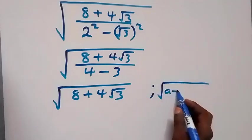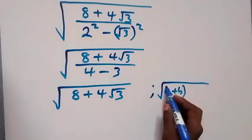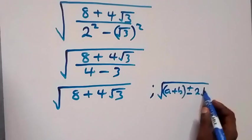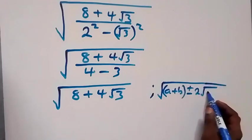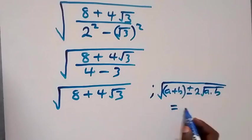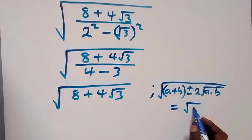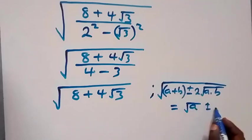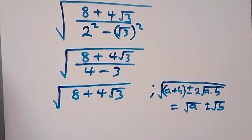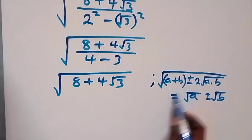Root a plus b, plus or minus 2 root a times b, then here the results will give us simply root a plus or minus root b. Now from here, let's try and write this one. What we are dealing with here is the plus sign.